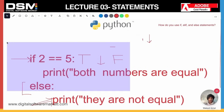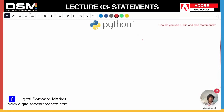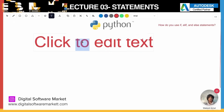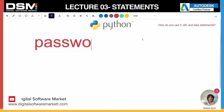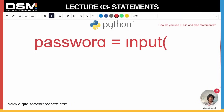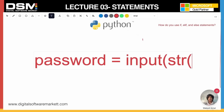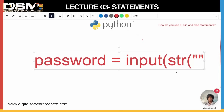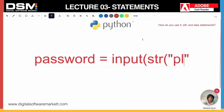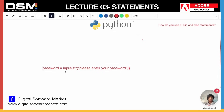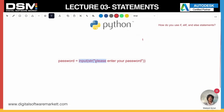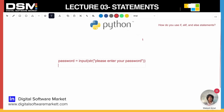Now that we know how if statements work, let's write the password program. The first thing we want to do is take an input. We store the password into a variable: password = str(input('Please enter your password: ')). We use str to ensure it's a string, and we need two closing brackets — one for input and one for str.